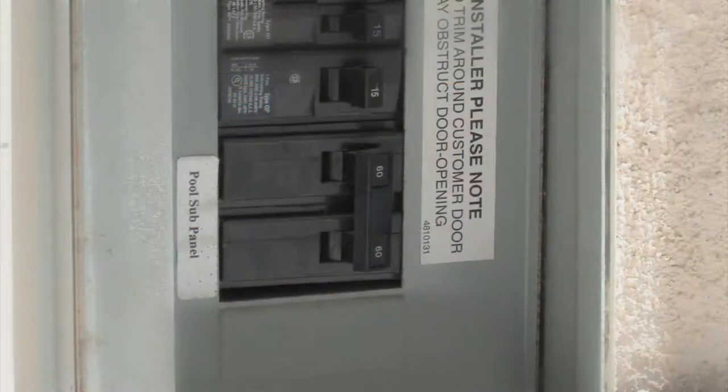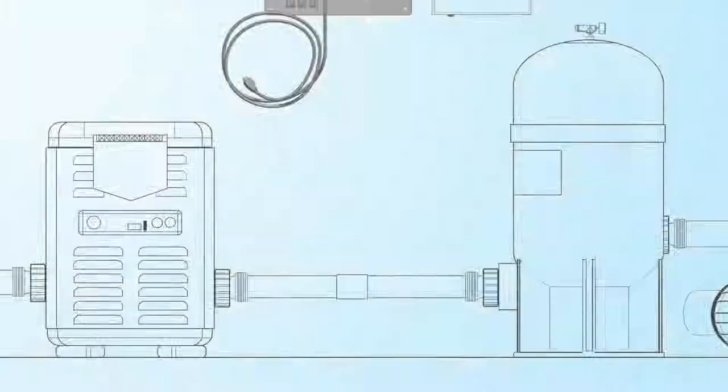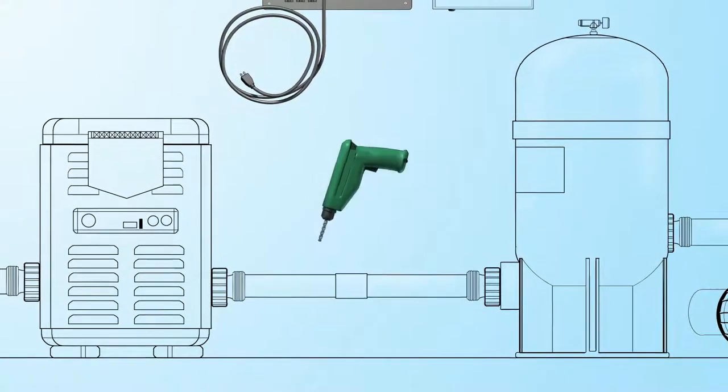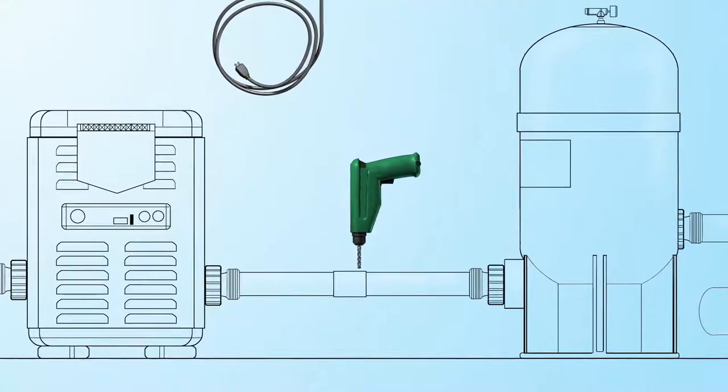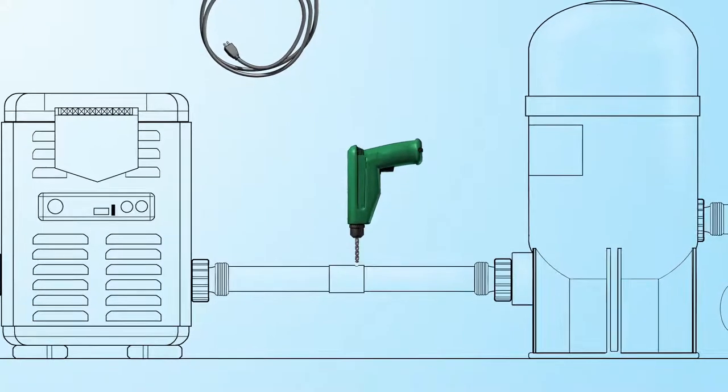To install the controller, first turn off the power at the breaker box. Drill a 7-16 inch hole in a horizontal section of the pipe, downstream from the filter, and upstream from the heater.